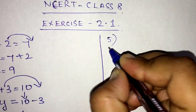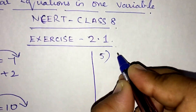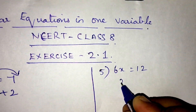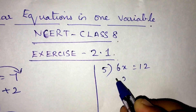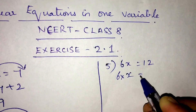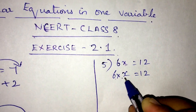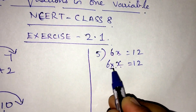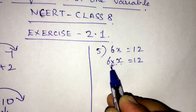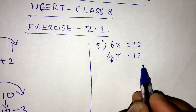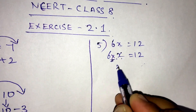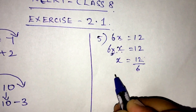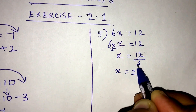Moving on to the fifth sum: 6x is equal to 12. This is 6 into x equals 12. When the coefficient is on the multiplication side, it goes to the other side as division. So the value of x will be 12 divided by 6, which is 2.